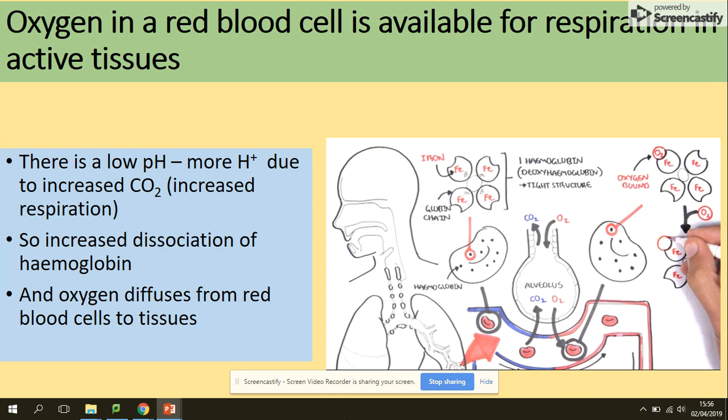Imagine respiration is taking place at a high level — there will be lots of products, there will be lots of carbon dioxide. This increased carbon dioxide, a product of respiration, will lower the pH. If there is a low pH, that means there is a high concentration of carbon dioxide, which means the oxygen has to be dissociated from hemoglobin.